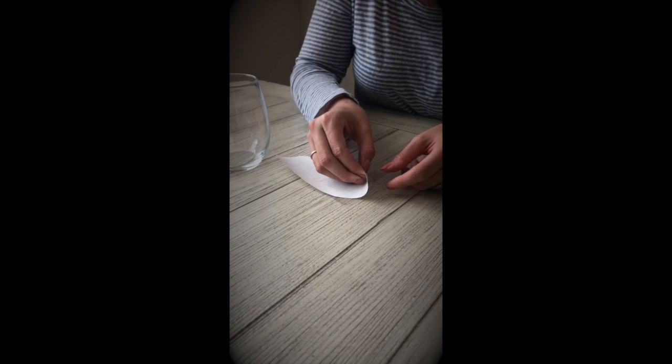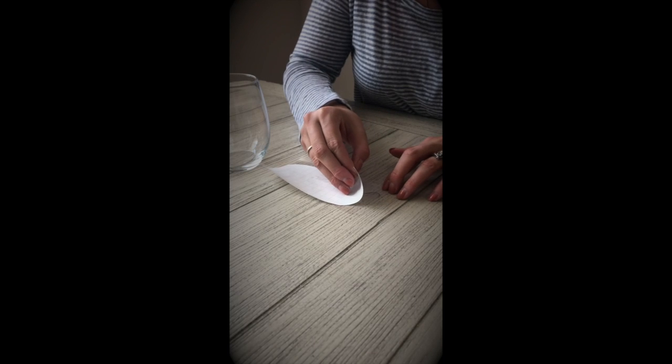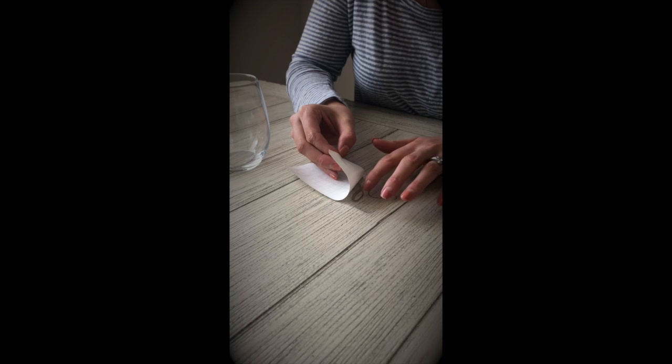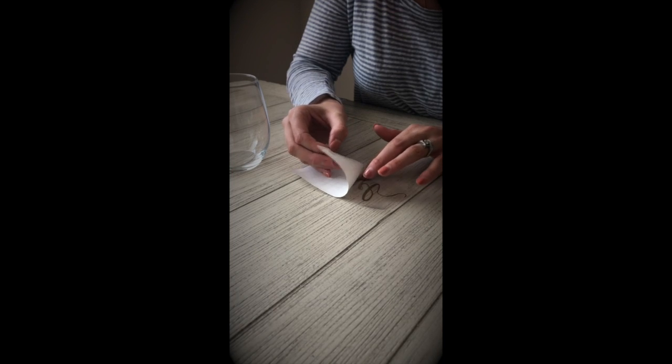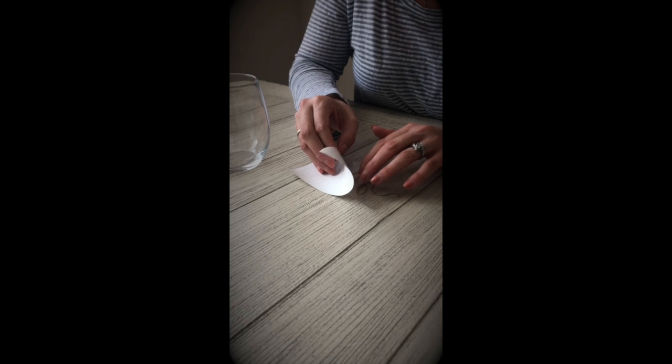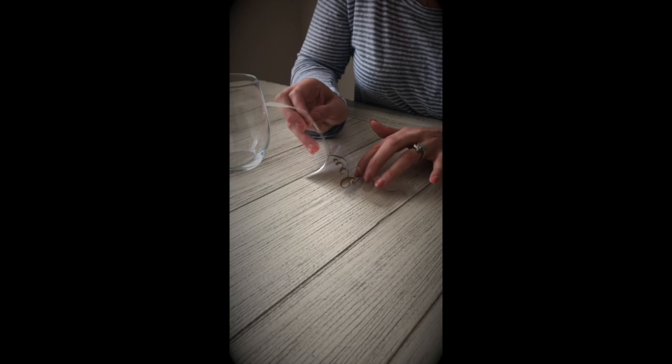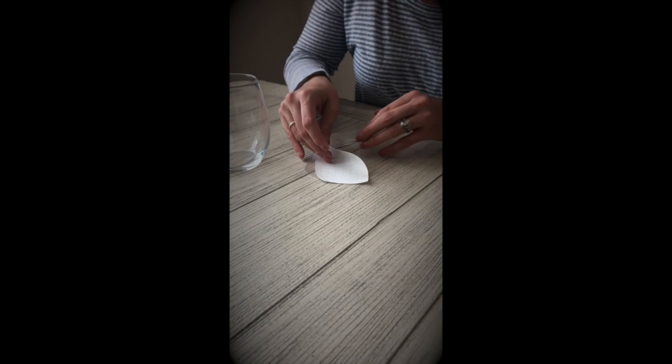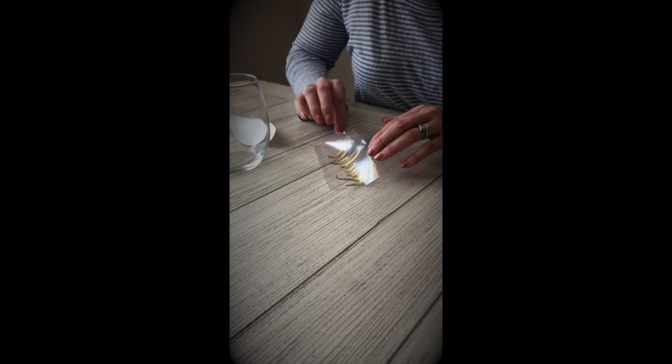And then what you're going to do is you're going to peel back this part that's checkered so that the design, and if your design is really intricate like a lot of the letters sometimes you just need to poke them down a little bit. Sometimes you have to come from another direction. It'll feel right, you know, one way feels right one feels wrong.